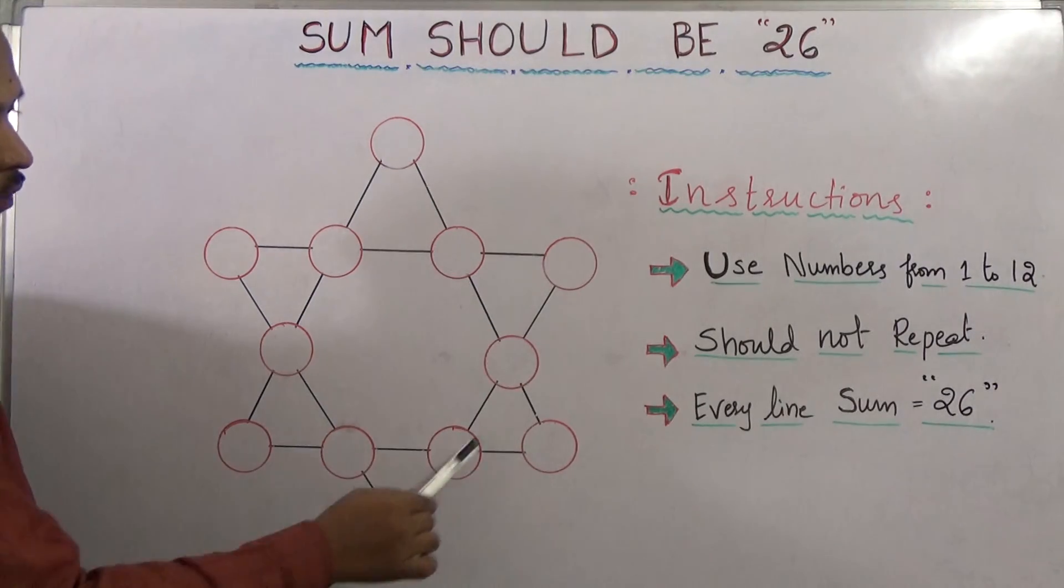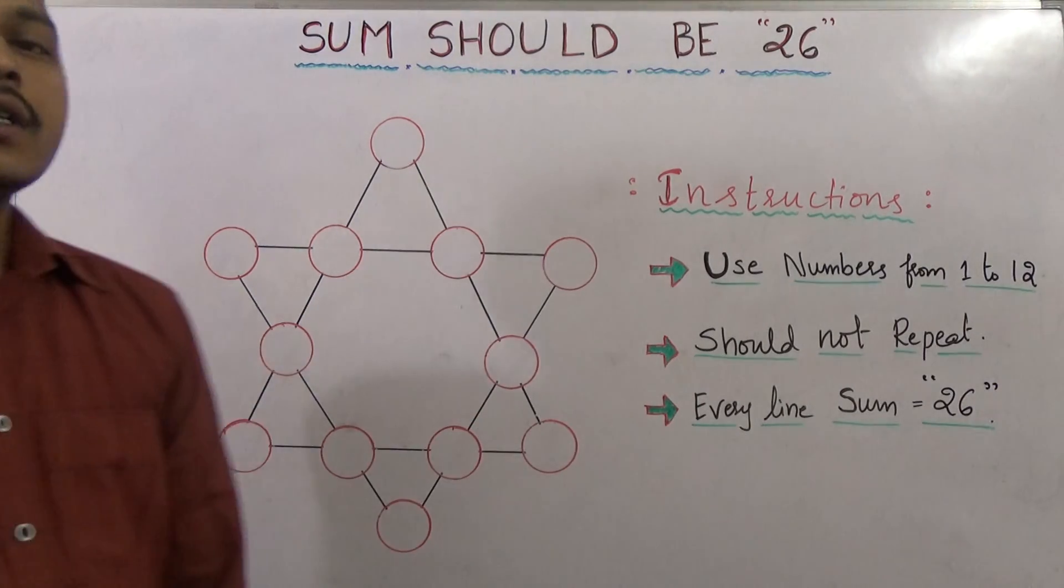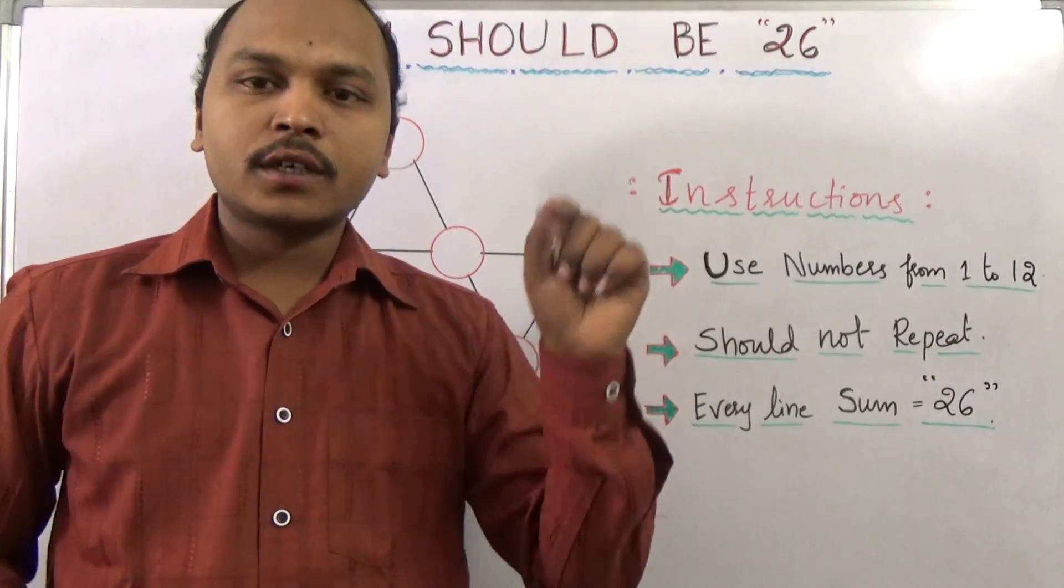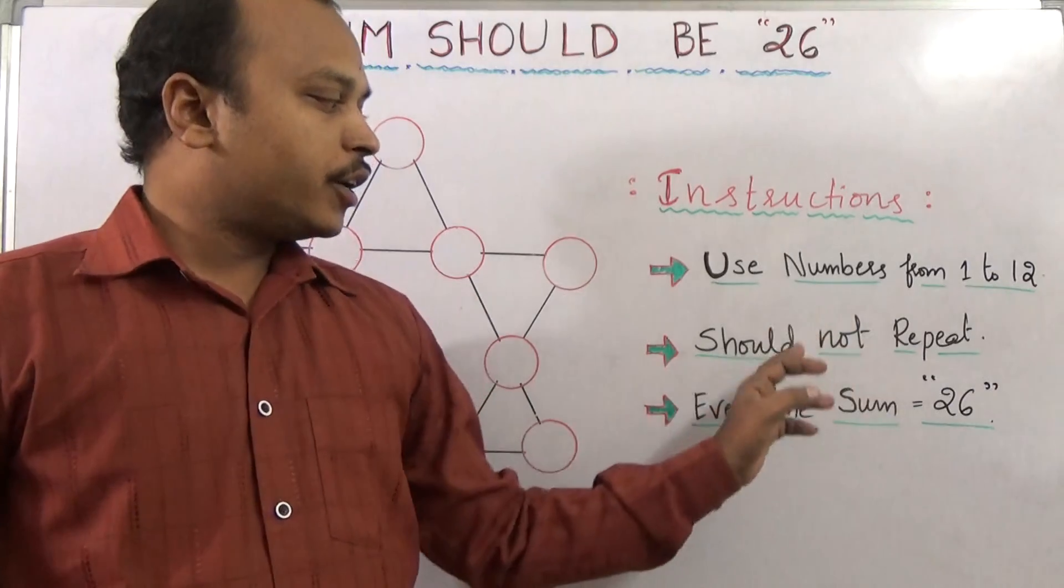And this is another row, again: one, two, three, four. Every row has four circles, and in total all the circles are only twelve. So in each circle we need to keep one number. The condition is you should not repeat any number.